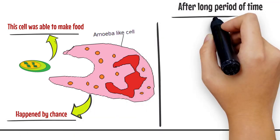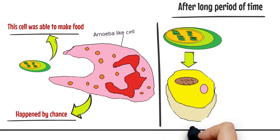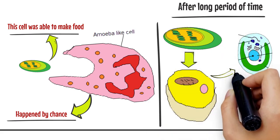After a long period of time, the cyanobacterium evolved into what we now know as the chloroplast, seen in algae and plant cells.